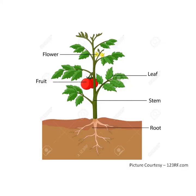Now let's see the different parts of plants. In the picture you can see different parts of a plant: roots, stem, leaves, flowers, fruits. These are the parts of a plant.